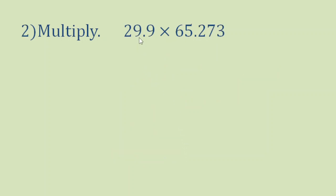Let's do another example. 29.9 times 65.273. Again we are going to arrange these two numbers vertically, ignoring the decimal points that we look like this.